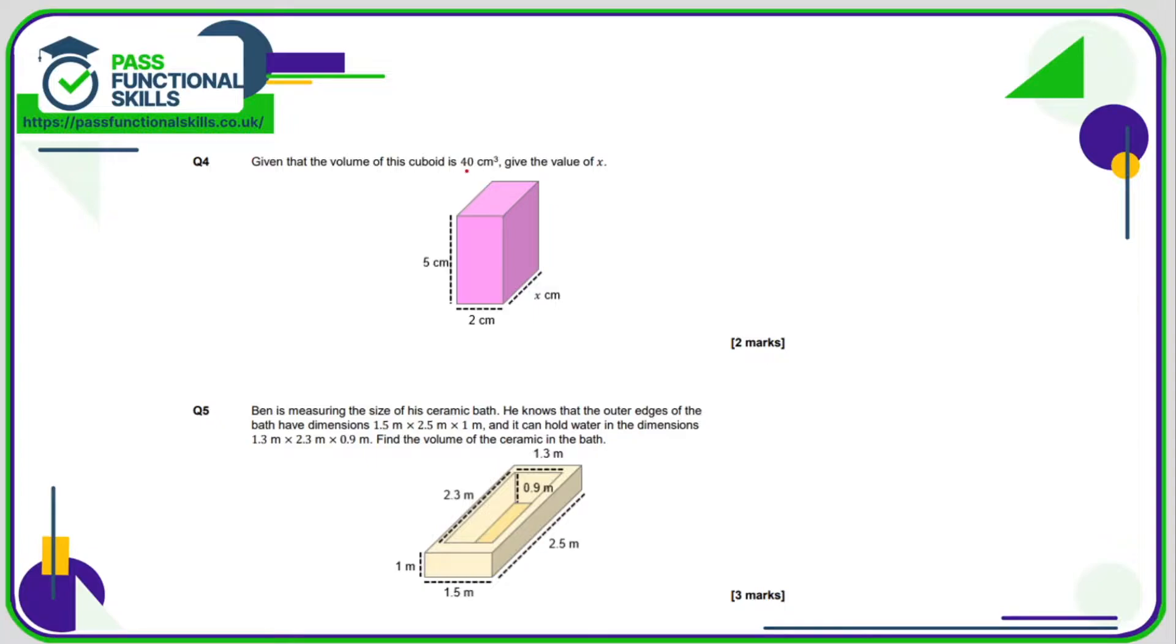Question number four, we've been given the volume and we need to work out a side length. So the volume would be 5 times 2 times x. 5 times 2 is 10, so 10 times x is 40, so 10 multiplied by x equals 40. 10 times what is 40? 10 times 4 is 40, so x equals 4.